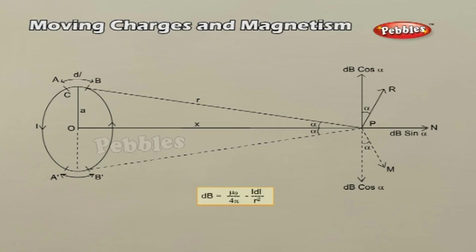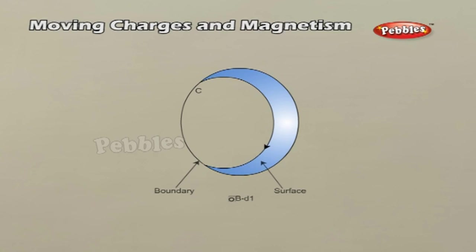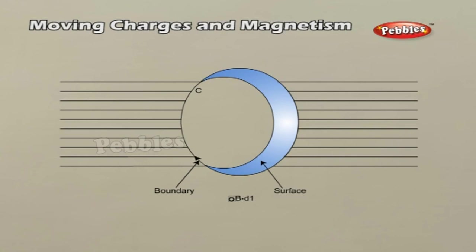Let the angle between the axis of the coil and the line joining the element dL and the point P be α. Ampere's law is a relationship between the tangential component of the magnetic field at points on a closed curve and the net current through the area bounded by the curve. Ampere's law is formulated in terms of the line integral of B along a closed path. We divide the path into infinitesimal segments dL, and for each one calculate the scalar product of B and dL.